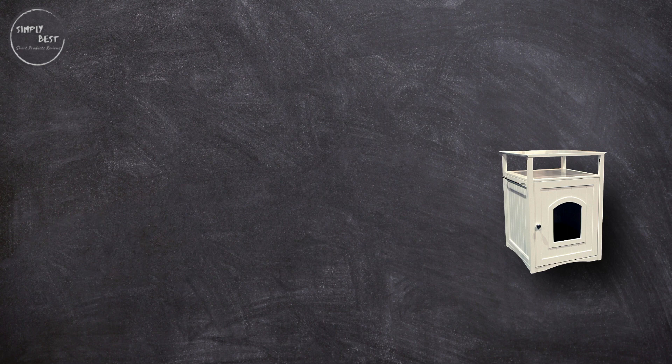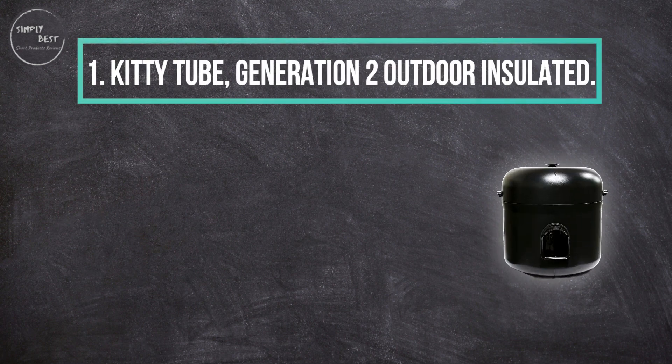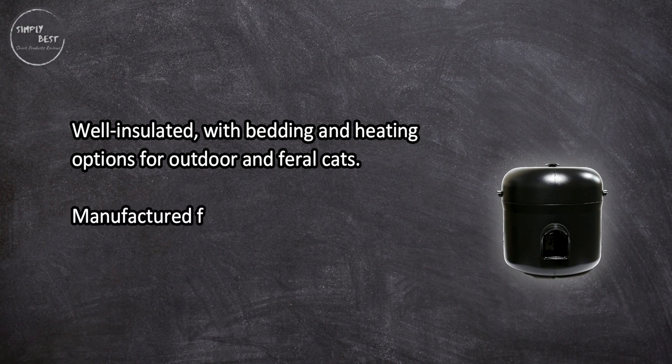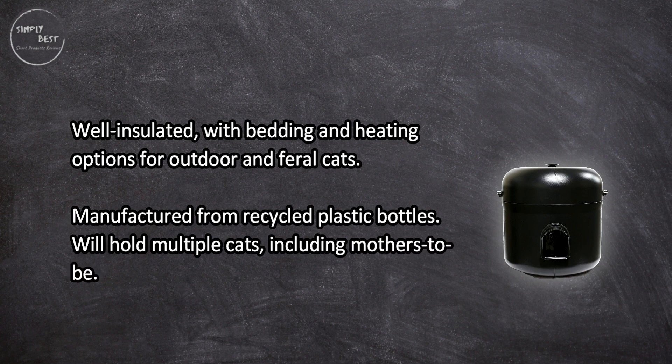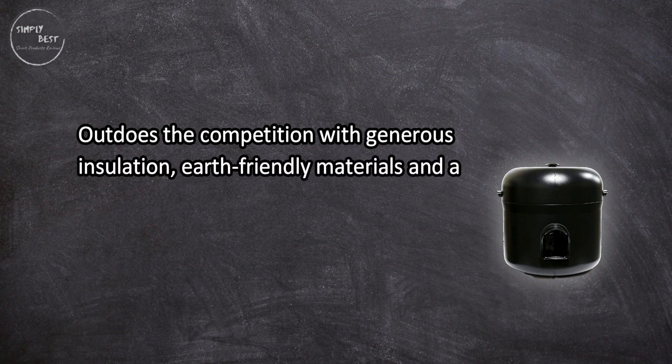At number one, Kitty Tube Generation 2 Outdoor Insulated. Well insulated with bedding and eating options for outdoor and feral cats. Manufactured from recycled plastic bottles, will hold multiple cats including mothers-to-be. Outdoes the competition with generous insulation, earth-friendly materials and a spacious well-protected interior.